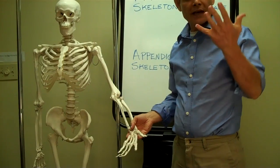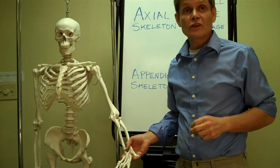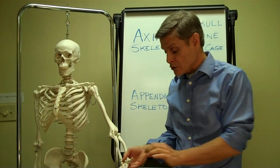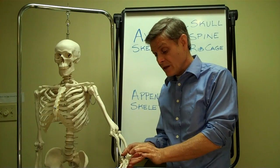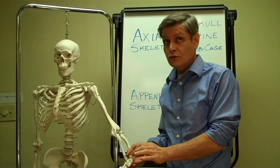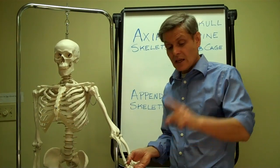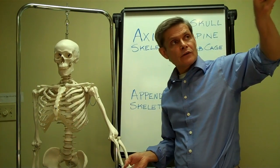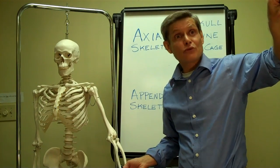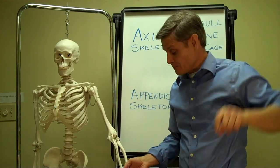We only have five fingers, but we have fourteen finger bones because your thumb has two phalanges, and each of the other four fingers has three phalanges.